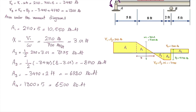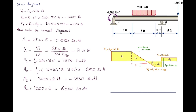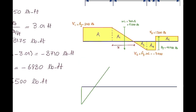Knowing these values, we can construct a moment diagram. We start from the left side. There is an initial value of negative 4500, because that is counterclockwise, which goes downward. So we have negative 4500 at this end. It is going to go upward linearly. The moment at the left side is Ma, which is negative 4500. The moment at the next point would be the initial value of negative 4500 plus Area 1, which is 10,550, and that would result in 6050 pound-feet.